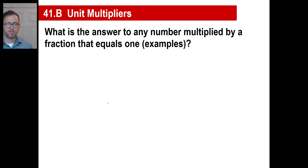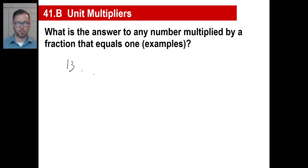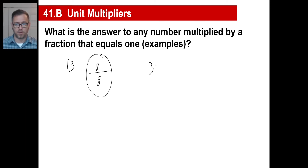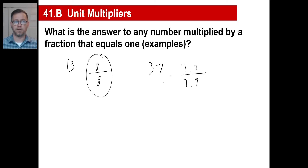Here's another question for you. What's the answer to any number multiplied by a fraction that equals one? Let's say you have to work with the number 13 and we're going to multiply it by eight over eight. The answer is still 13, because this is a fraction with different numbers, but you've just multiplied by one. You have 37 and you multiply it by 7.9 over 7.9, you still have 37. That's the secret to doing unit multipliers.